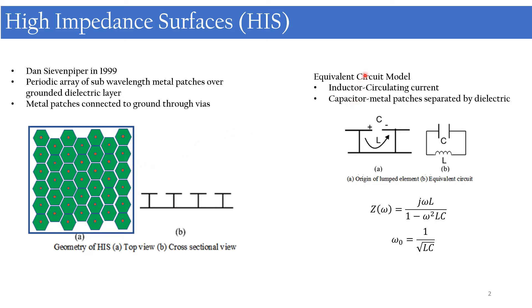When we consider the equivalent circuit model, due to the current flowing between these patches and the ground layer, they form an inductive component. As these patches are separated by the dielectric, they form a capacitive element. So this can be considered as a parallel combination of an inductor and capacitor. The total impedance is given by Z(ω) = jωL / (1 − ω²LC), and the resonance frequency is defined as 1/√(LC).